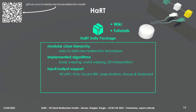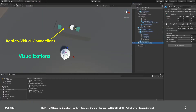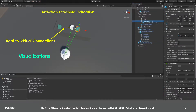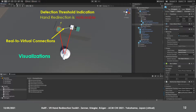As setting up a complete VR system for development or quick scene tests can be tedious, the toolkit additionally allows users to simulate hand movements with mouse and keyboard. In order to support the creation of scenes that employ hand redirection and to ease the workflow, the toolkit further offers a variety of visualization features. It highlights real-to-virtual object connections in the scene view and provides useful detection threshold indicators, which highlight noticeable and unnoticeable redirections already during scene setup.